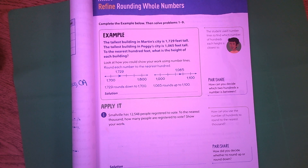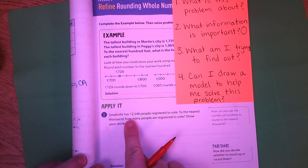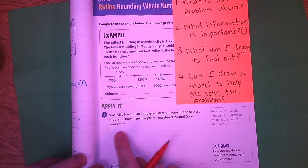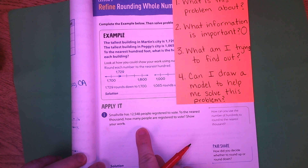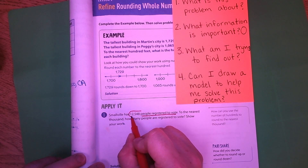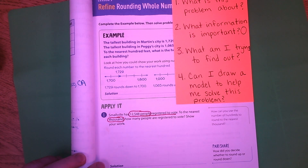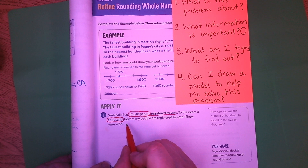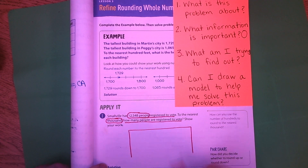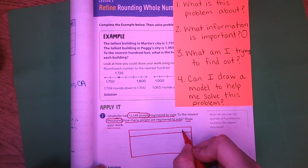I'm not going to spend a whole lot of time going over these, but we are going to go over them. Number one: Smallville has 12,548 people registered to vote. To the nearest thousand, how many people are registered to vote? Show your work. What is this problem about? It's about people registered to vote. What information is important? It's important to know that they have 12,548 people and that we are rounding to the thousand.